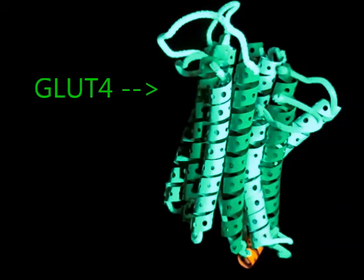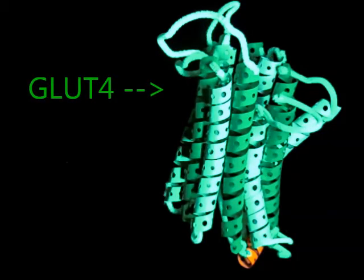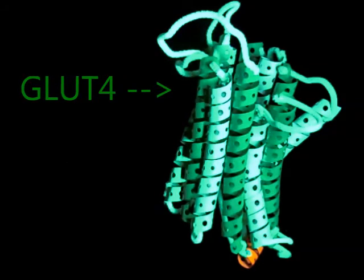Insulin receptor substrate 1 or IRS1 co-localizes with a membrane receptor on the cytosolic side of the membrane where it too becomes phosphorylated at multiple tyrosine residues.